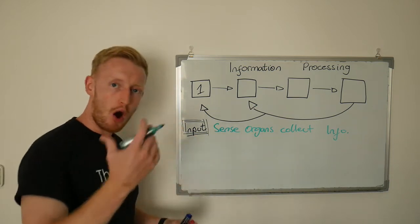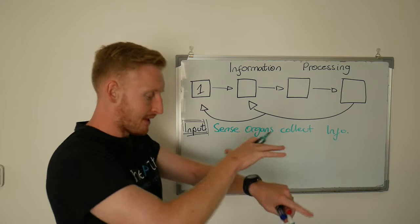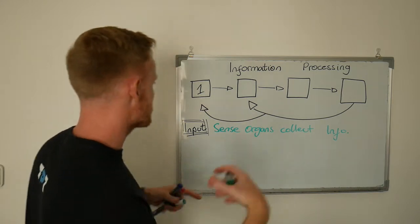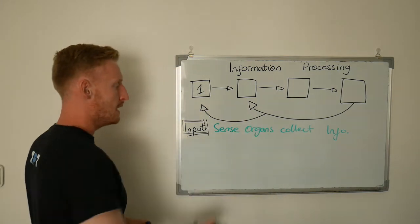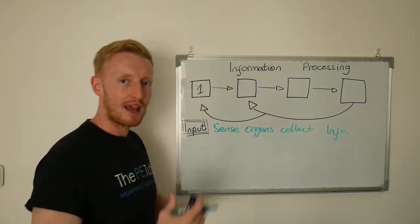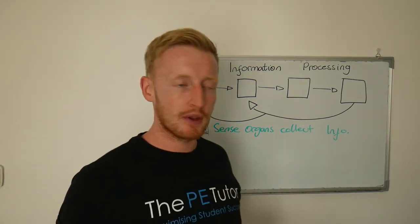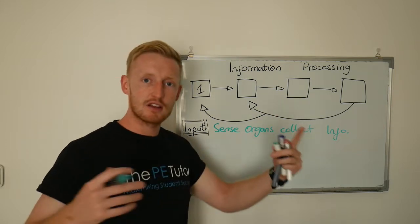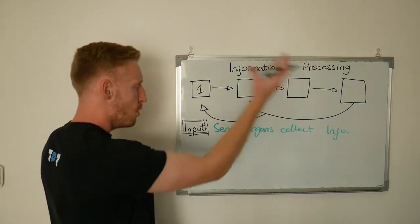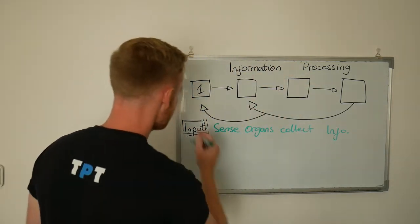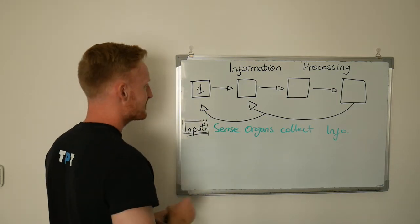So our sense organs being our eyes, our ears, our kinesthesis, our balance, our smell, our taste, whatever it might be. We're working out where we are. We're collecting all the different pieces of information around us—the speed, the distances, the heights—and we put that into our brain, at which point we enter stage two.